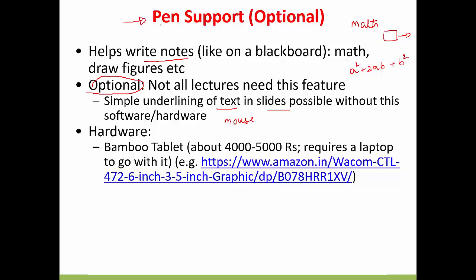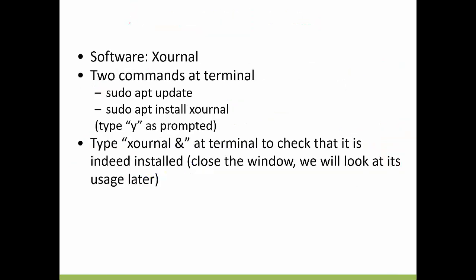If you decide you need pen support, you have to invest in hardware. In this case, you can buy something called a Bamboo tablet. This is an add-on to your laptop — you connect the Bamboo tablet to it. This is the cheapest solution, costing about 4,000 to 5,000 rupees. You can see a sample at the provided URL. When you use a Bamboo tablet, as you write on the tablet, you have to look at your laptop screen for feedback. This requires a little getting used to, but with half an hour of practice you should be able to write well.